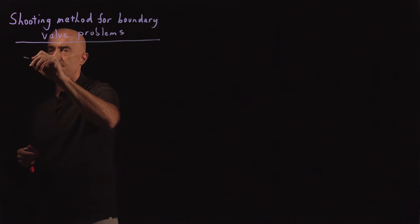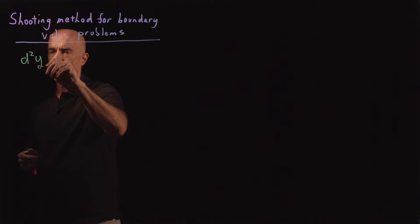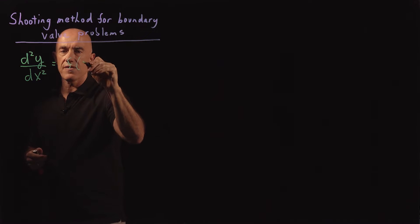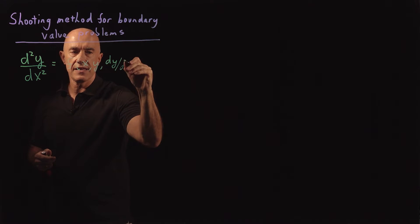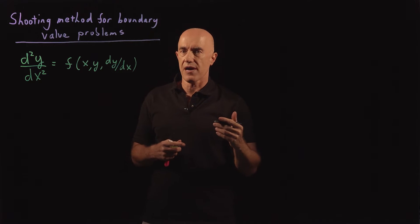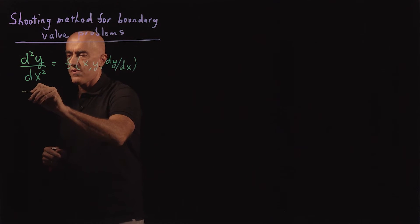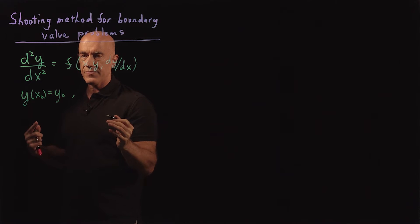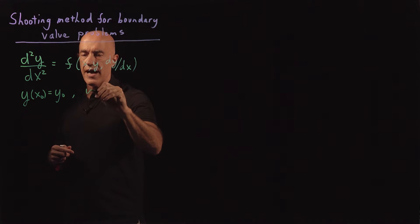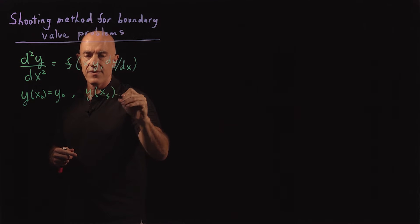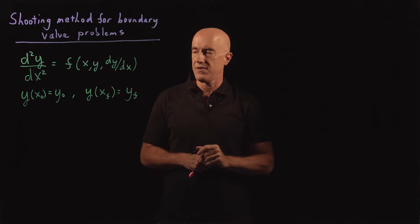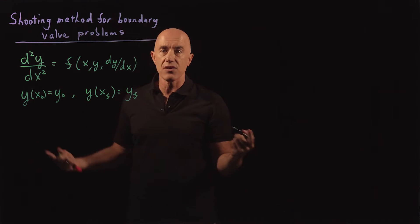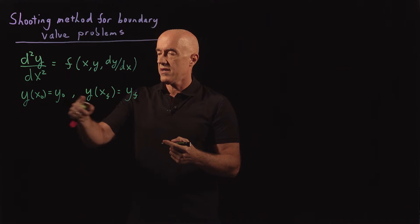We're looking to solve a boundary value problem — say it's a second-order differential equation: d²y/dx² equals some function of x, y, and dy/dx. By a boundary value problem, what we're given is the value of y at some initial x value x0, so y(x0) = y0. We also know the value of y at some final value xf, so y(xf) = yf. It's called a two-point boundary value problem because the values of y are given at the boundary of the domain, which goes from x0 to xf.